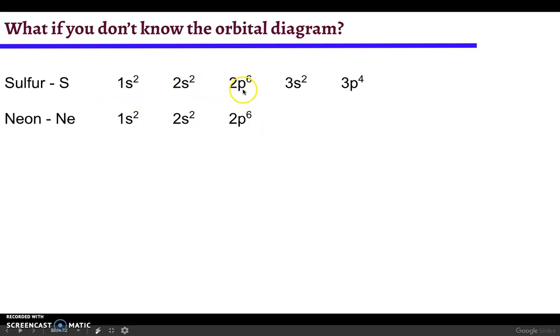So the abbreviated way to write the electron configuration for sulfur is just to call all of this neon and then add the valence electrons. So 3s2 and 3p4.